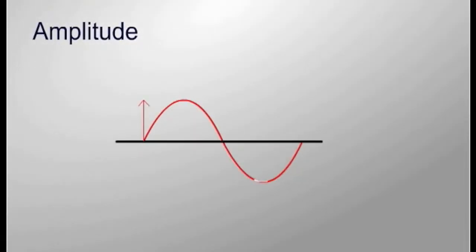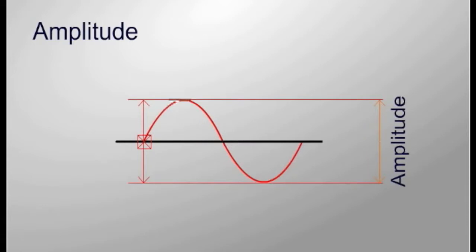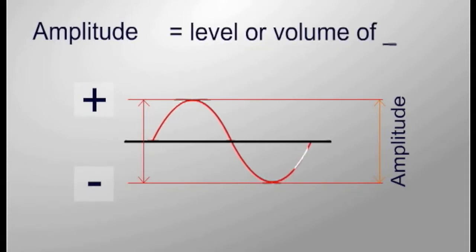The distance above or below the centerline of a sine wave to the peak and valley is the amplitude. A waveform has both positive and negative amplitude. We interpret amplitude as the level or volume of the signal.